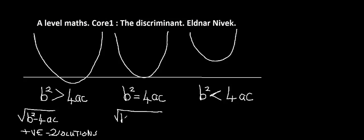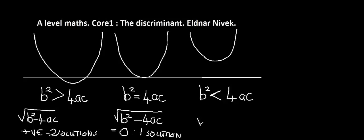If b squared equals 4ac, then b squared minus 4ac will be zero. So we'll get just one solution.